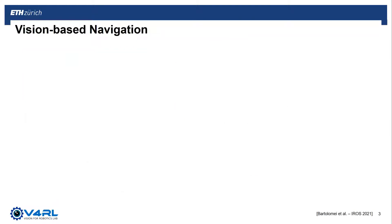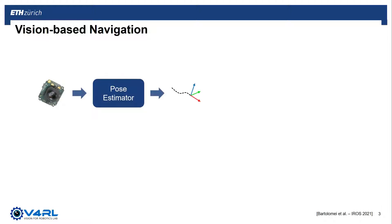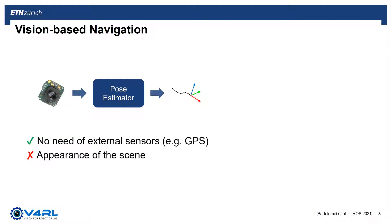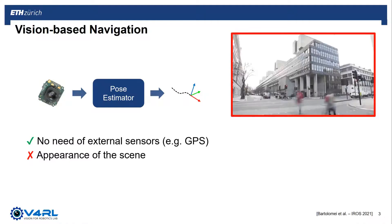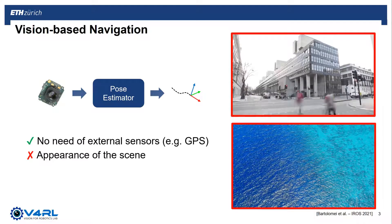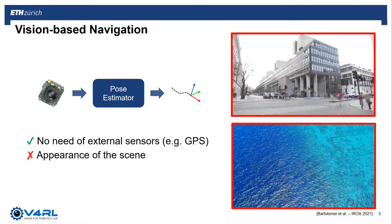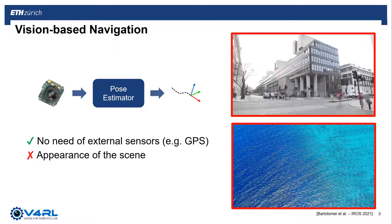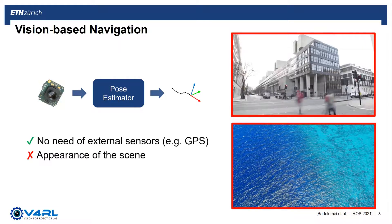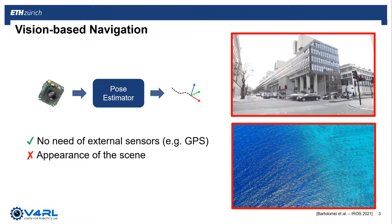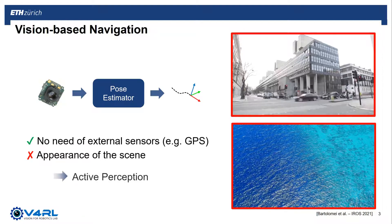Vision-based navigation is a valid alternative. The idea is to go from camera images to pose estimates without the need of an external sensor, such as GPS. On the other hand, vision-based estimators greatly rely on the appearance of the scene. Dynamic scenes or reflective surfaces can cause large errors in the position estimates and failures in the estimation process. To alleviate such problems, research has been carried out in the field of active perception.